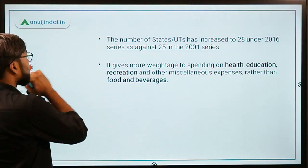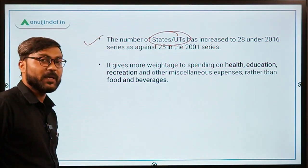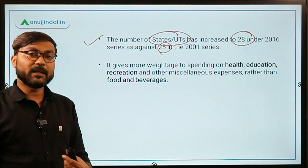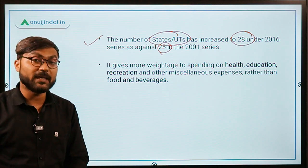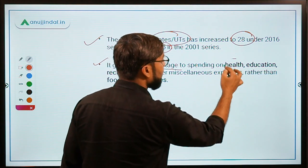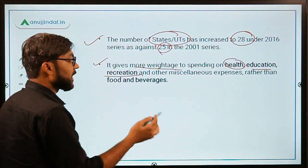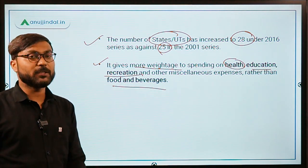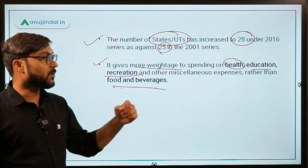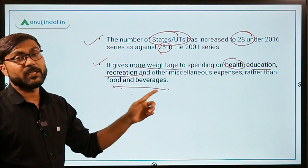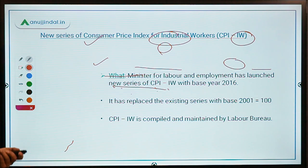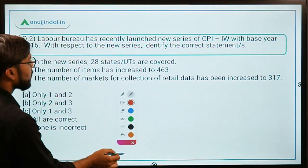The number of states and UTs covered under CPI-IW has increased to 28, from 25 earlier. The new series also gives more weightage to spending on health, education, and recreation, rather than food and beverages. The focus has thus shifted from food and beverages to health, education, and recreation.